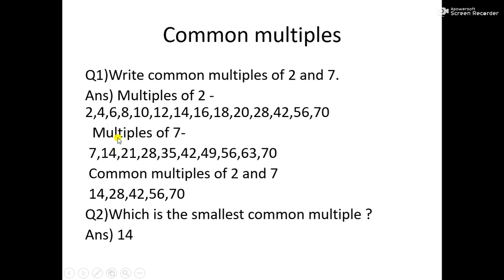Likewise, we will write multiples of 7: 7, 14, 21, 28, 35, 42, 49, 56, 63, 70. All these are numbers which can be divided by 7, so all these are multiples of 7. We have to find common multiples of 2 and 7 — those numbers which are multiples of 2 as well as of 7. 14 is a multiple of 2 as well as a multiple of 7, so it is a common multiple of 2 and 7.